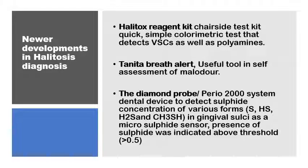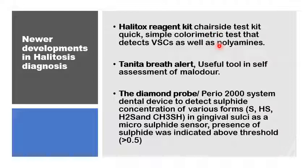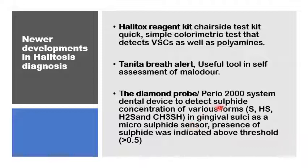Finally, some newer developments in halitosis diagnosis include a new portable colorimetric equipment that can measure both the volatile sulfur compounds as well as the polyamines. There is also a Tanita breath alert test which can be used by patients for self-assessment of their malodour. And there is a newer micro sulfide sensor that can be used by dentists to identify volatile sulfur compounds in various concentrations in things like periodontal pockets or certain areas of the oral cavity.